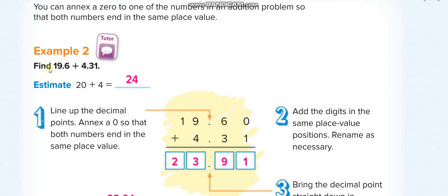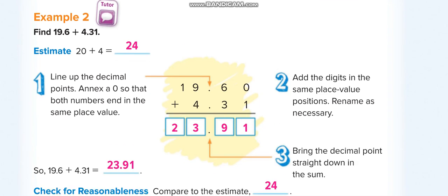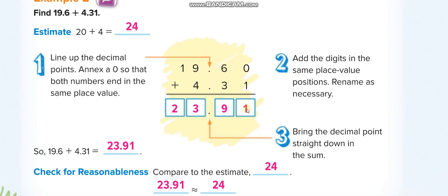This number has hundredths and this one doesn't, so we can put a zero. You know we can put as many zeros as we want according to our need. Then we add simply: 0 plus 1 is 1, 6 plus 3 is 9, 9 plus 4 is 13—3 here, 1 up—and 1 plus 1 is 2. So 23.91, which is close to 24.